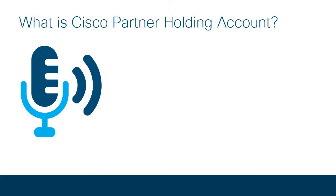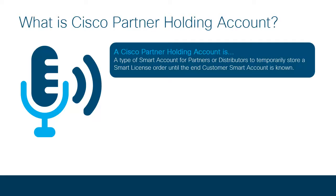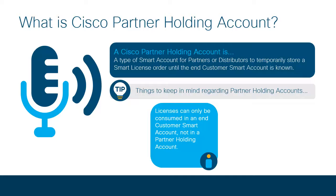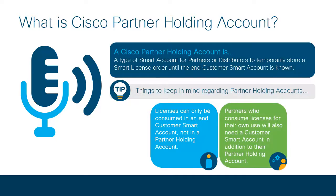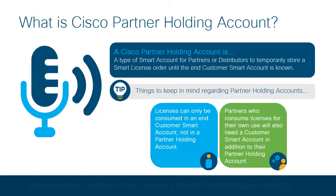A partner holding account is a type of smart account for partners or distributors to temporarily store a smart license order until the end customer smart account is known. It is important to note that licenses can only be consumed in an end customer smart account, not in a partner holding account. Partners who consume licenses for their own use will also need a customer smart account in addition to their own partner holding account. Anyone who has a Cisco ID can request a partner holding account and it's free.